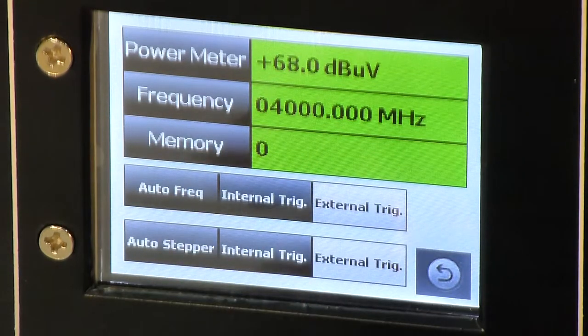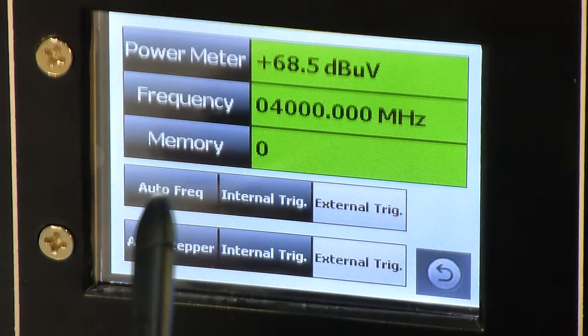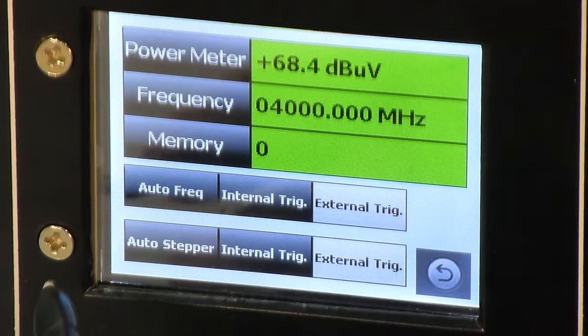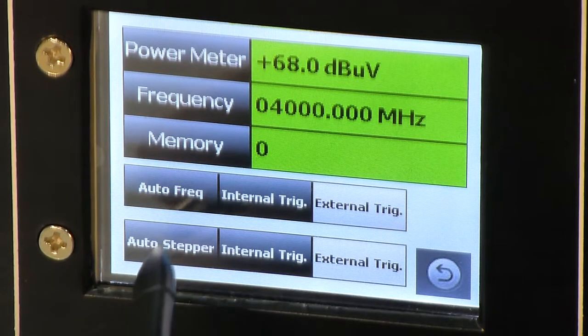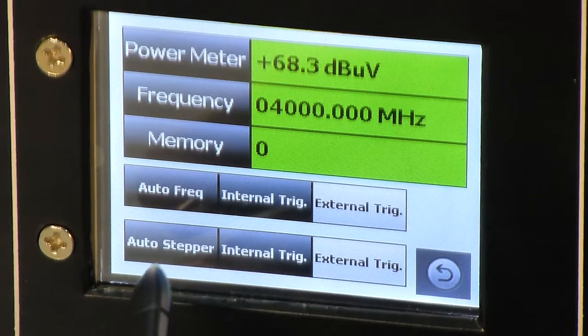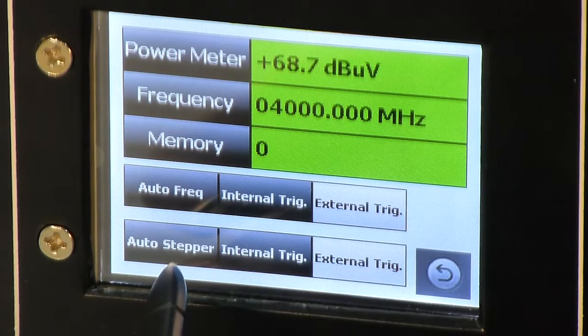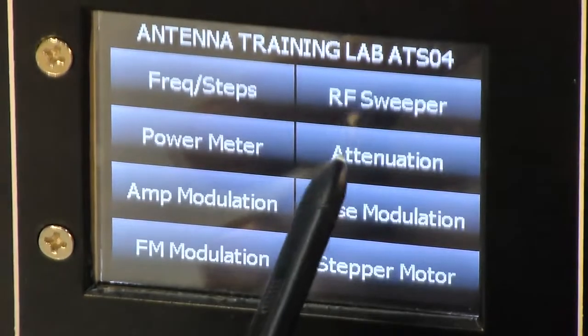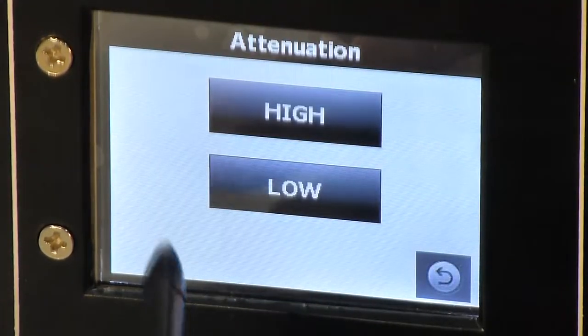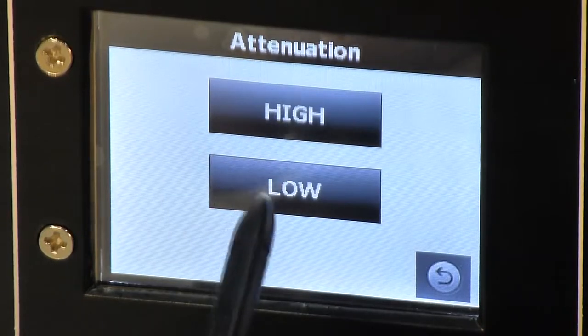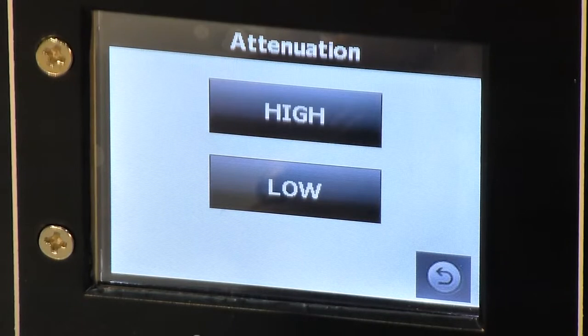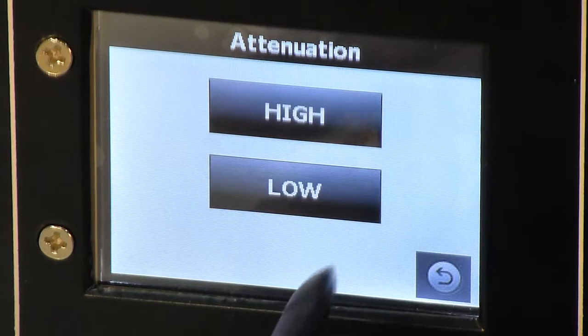And then there are few more options for synchronizing this instrument with internal or external frequency trigger for plotting the antenna. There is option for internal or external frequency stepper trigger. On attenuation option, you will see two buttons, high and low. If you press the high attenuation, that means power level will be low. When you press the low attenuation option, that means power level will be high.